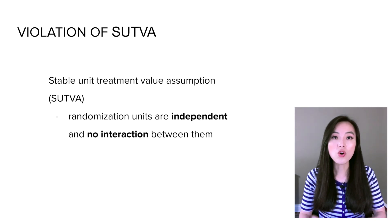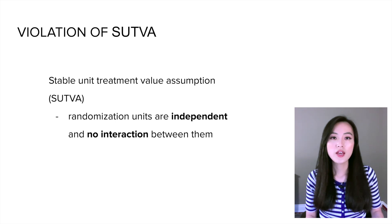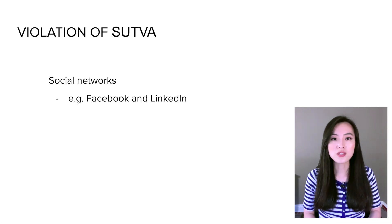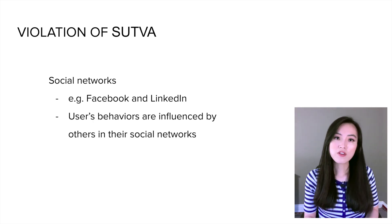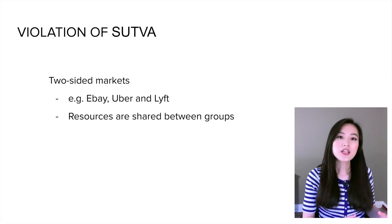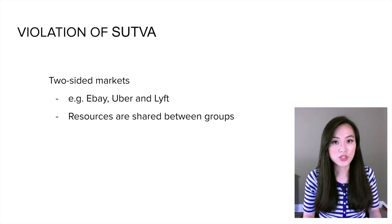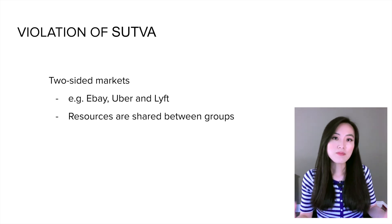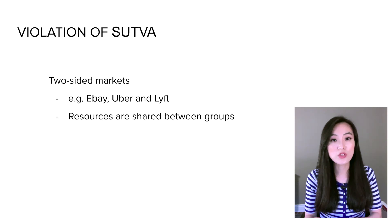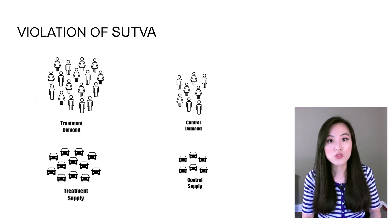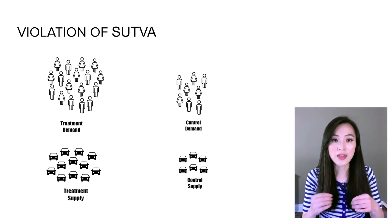If there is interference or spillover between different groups, then the result is definitely not reliable — the estimated treatment effect could either underestimate or overestimate the true treatment effect. In reality, this assumption is commonly violated. For example, in social networks such as Facebook and LinkedIn, users' behaviors tend to be impacted by others in their social circles. Another violation often happens in two-sided markets such as eBay, Uber, and Lyft, where control and treatment groups compete for the same resources.